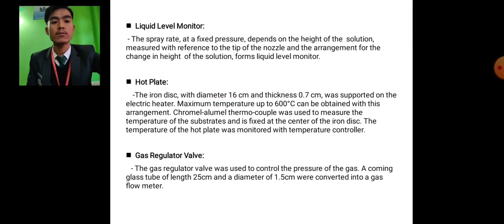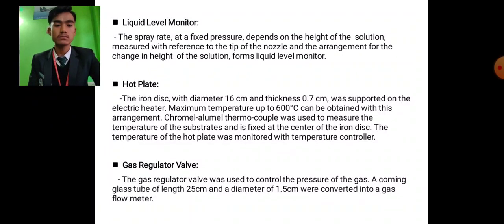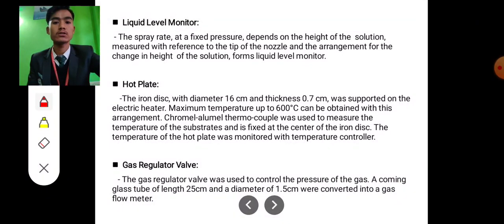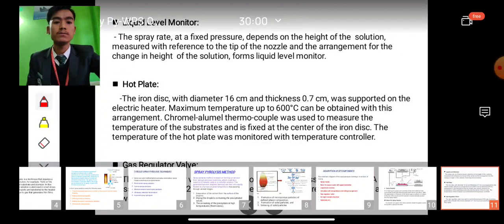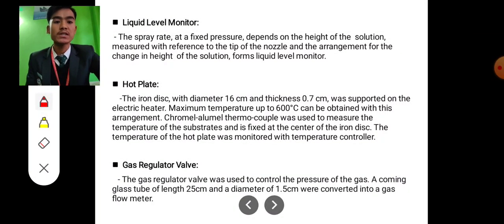Liquid level monitor: the spray rate at fixed pressure depends on the height of the solution measured with reference to the tip of the nozzle, and the arrangement for the change in height of the solution forms liquid level monitor. Hot plate: the iron disk with diameter 16 centimeters and thickness 0.7 centimeter was supported on the electric heater. Maximum temperature up to 600 degrees Celsius can be obtained with this arrangement.